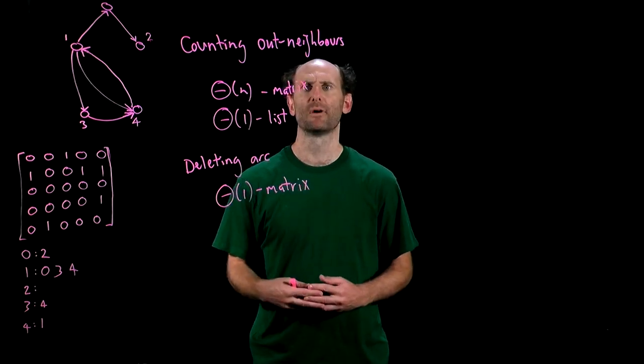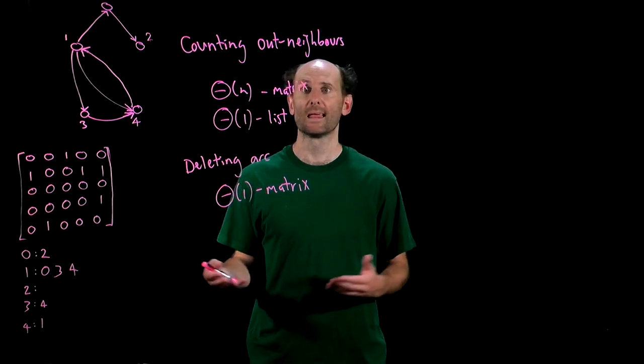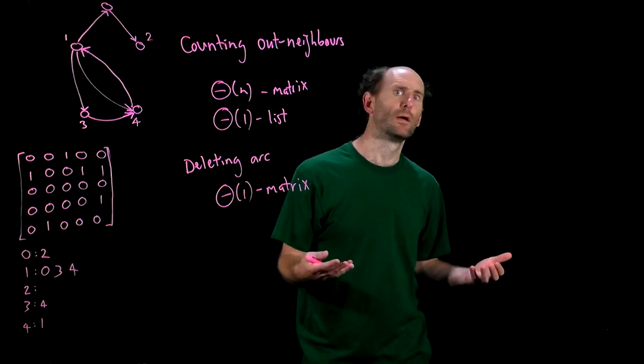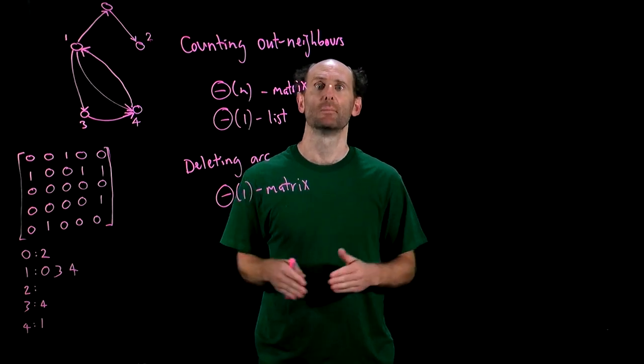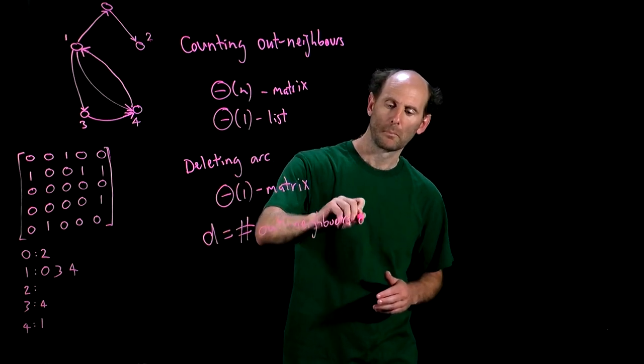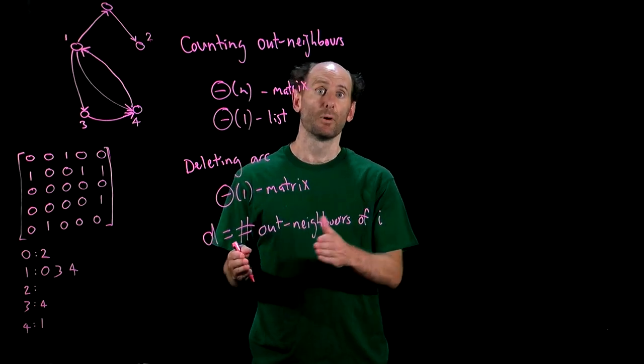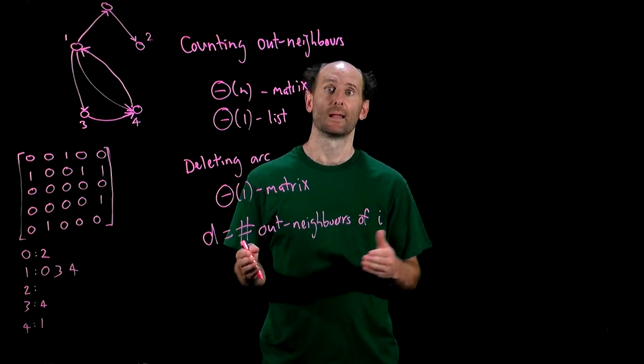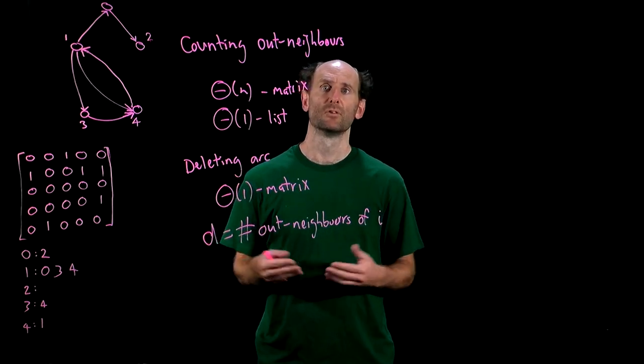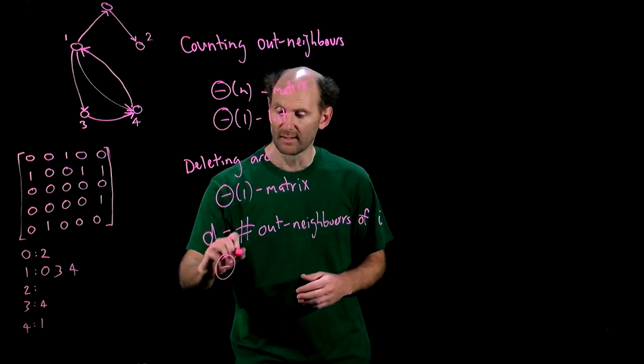For adjacency lists we need to find and remove j from the i-th list. How long that takes depends on the length of the list. That is the number of out neighbours of node i. So if we say i has d out neighbours. Simply finding j in the list requires looking through possibly a whole list of length d and that'll take time d. Once found removing j from the list is a constant time operation so overall the amount of work we have is theta d.